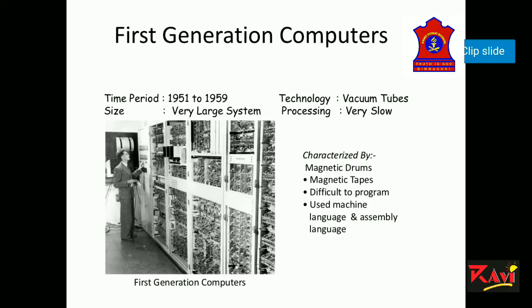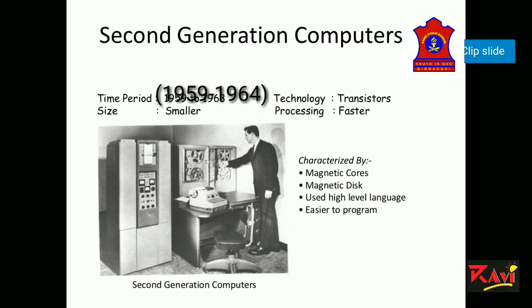Now let's look at the second generation computer. It started in the late 1950s and used transistors in place of vacuum tubes. It was quite faster than the first generation computer. A few examples of second generation computers are IBM 1401, Mark III, and Leo.